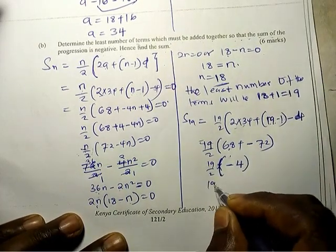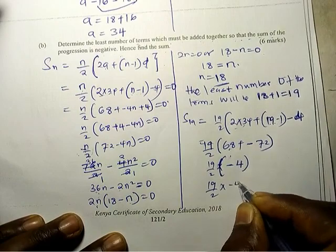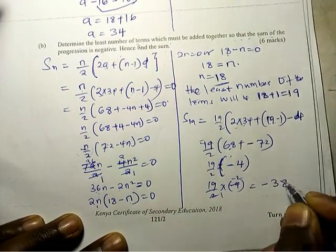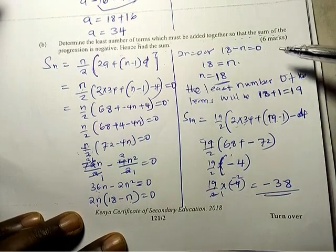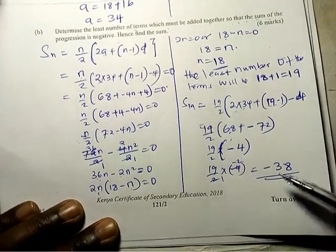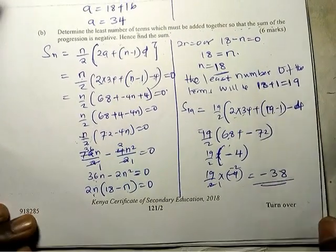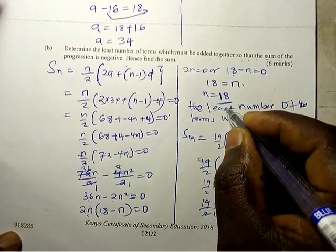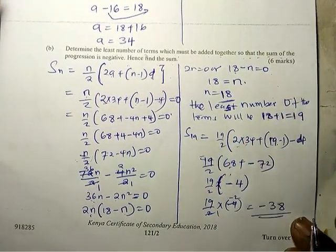So 19 over 2 times negative 4, here 1, here negative 2, so the answer is negative 38. So you have seen that the least, 19 is giving us the negative number. It was tricky, but you can see how it was supposed to be done. Thank you.